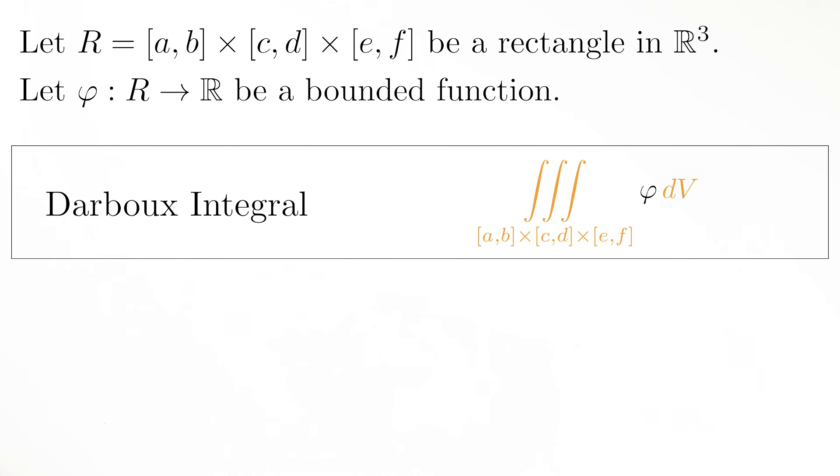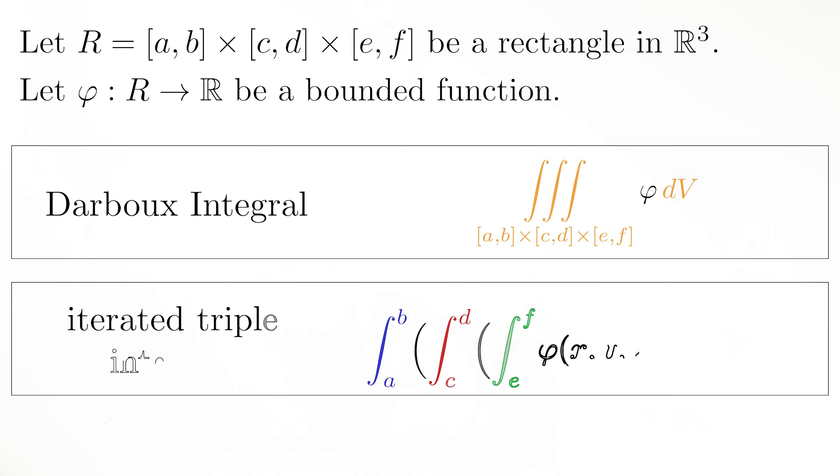The other six kinds are iterated triple integrals defined using three nested one-dimensional integrals. One example is the dz, dy, dx integral. There are five others depending on the order of integration for dz and dy and dx, but we will focus on this one for now.